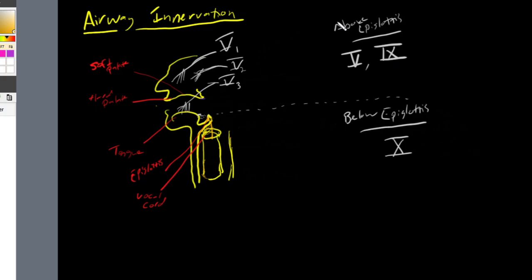Now we have one more nerve in this upper portion above our epiglottis — our glossopharyngeal nerve, cranial nerve 9. It innervates the posterior third of the tongue, and it also provides sensation to part of our soft palate, our pharynx, and our tonsils. So cranial nerve 9 supplies the inferior and posterior portion of our airway that is above the epiglottis.